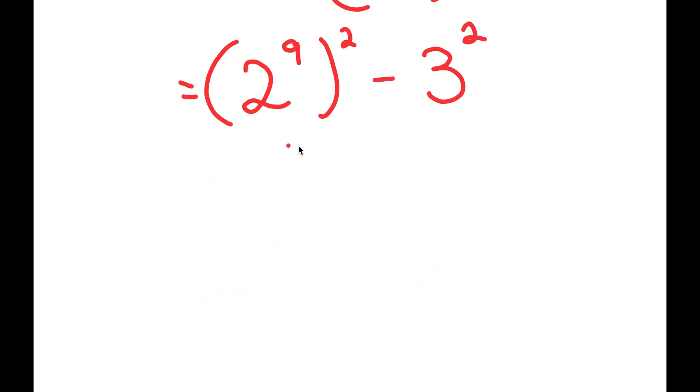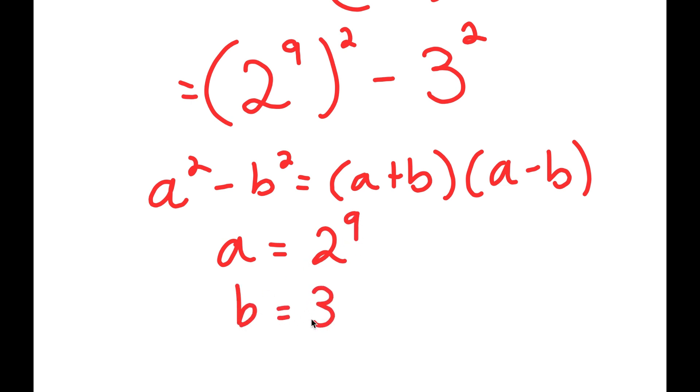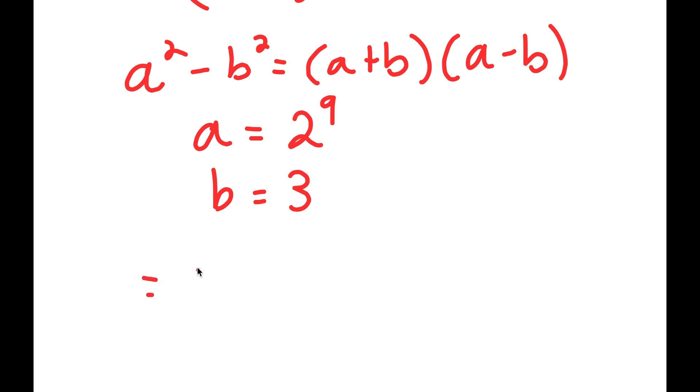Now from here, if I have something in the form a squared minus b squared, this is equal to a plus b times a minus b. So in this case, a is equal to 2 to the power of 9 and b is equal to 3. So I get 2 to the power of 9 plus 3 times 2 to the power of 9 minus 3.